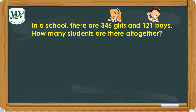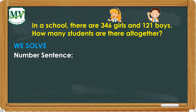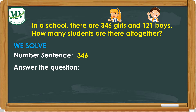Step 3: we solve. In this step, we will write the number sentence and do the solution. From the word problem, we have 346 girls plus 121 boys. This is our number sentence.